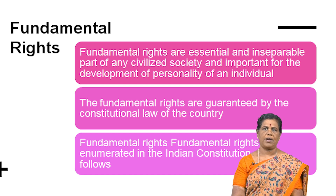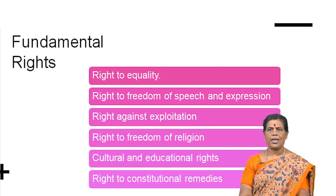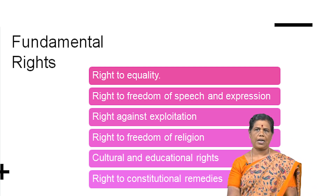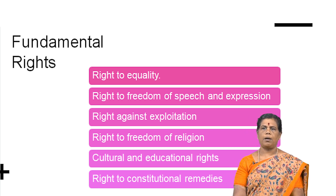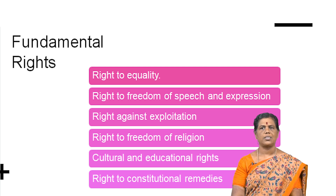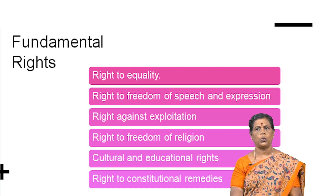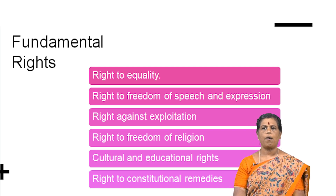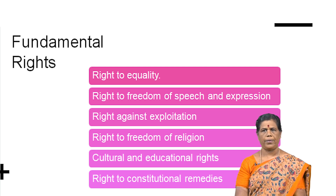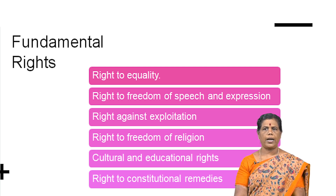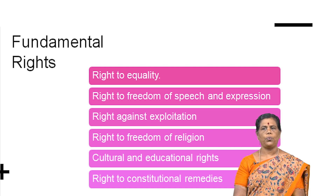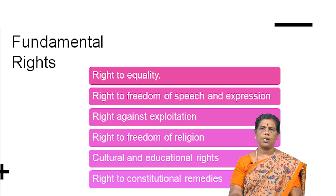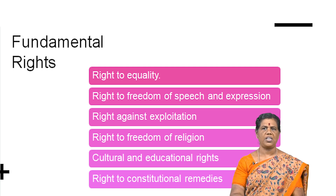What are the classifications of Fundamental Rights? Originally, the Fundamental Rights were given in the Indian Constitution as 7, but now at present there are 6 Fundamental Rights. First is right to equality, right to freedom of speech and expression, right against exploitation, right to freedom of religion, cultural and educational rights, and right to constitutional remedies. Let us see one by one what is the meaning of these rights.